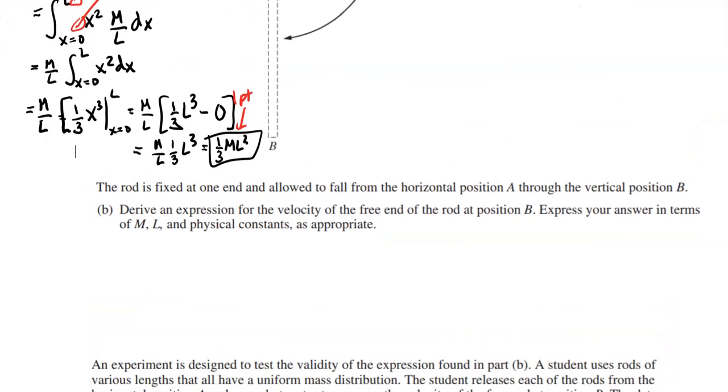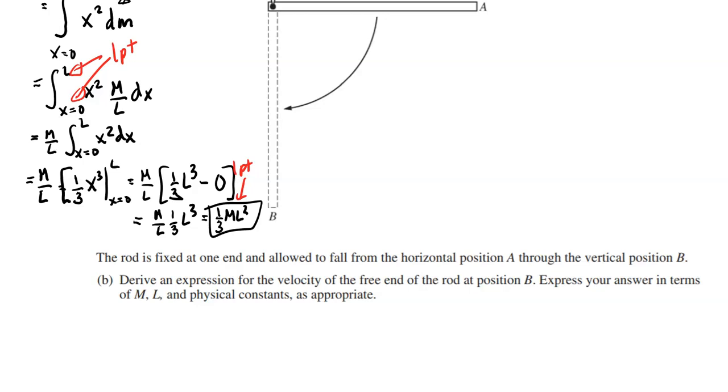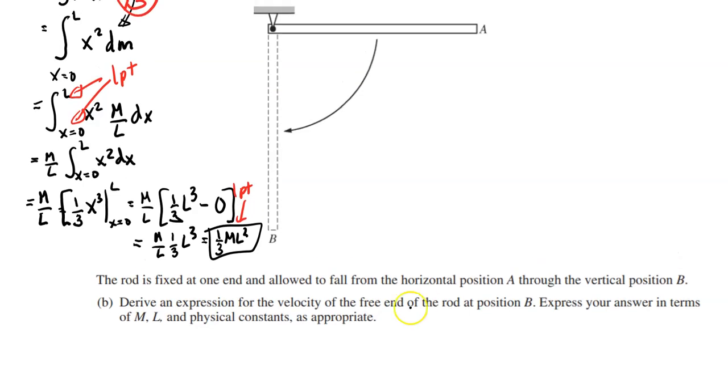Cool. Let's go ahead and go on to the next part. Okay. Good old part B. So, the rod is fixed at one end. Okay. We can see that in our picture. And allowed to fall from a horizontal position A, so right here, to the vertical position B. Okay. Derive an expression for the velocity of the free end. So, we want the velocity right here. And again, it's a linear velocity unless it says otherwise. So, linear velocity B. Express your answer in terms of M, L, and physical constant. So, like acceleration due to gravity, gravitational constant, all that good stuff.